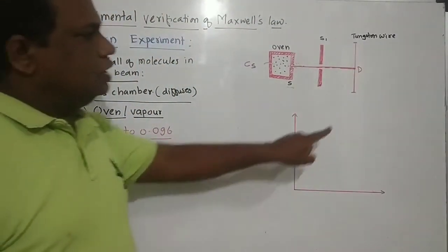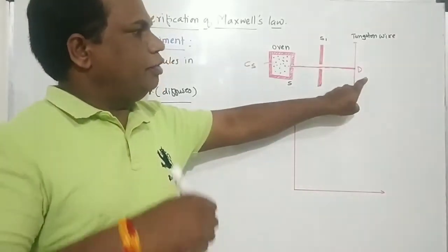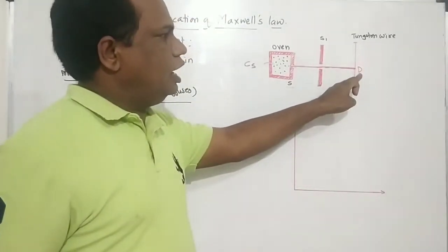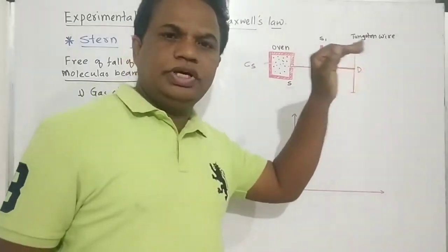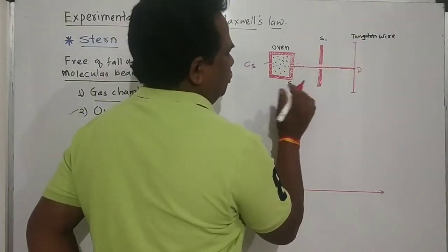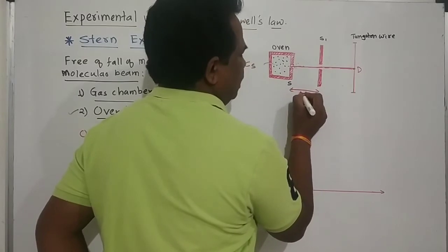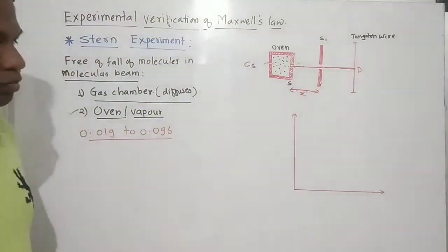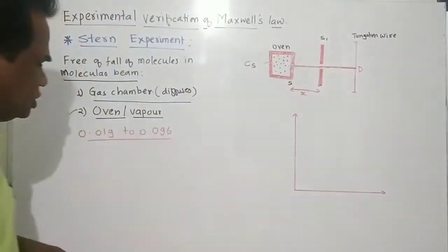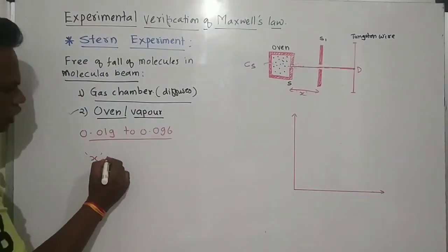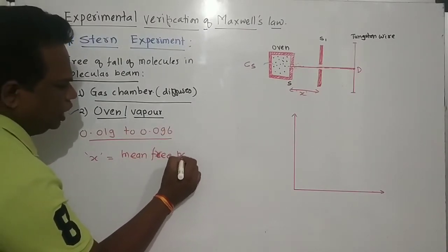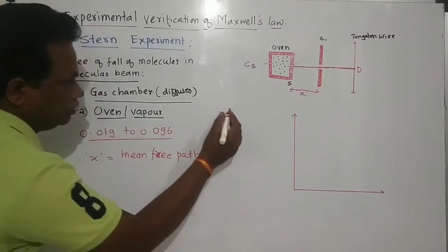We suppose this particular point is D — this is the reference point under no gravity. The distance between the oven and the slit is denoted x. This distance x is equal to the mean free path of gas molecules, ensuring the other molecules are free to travel between collisions.